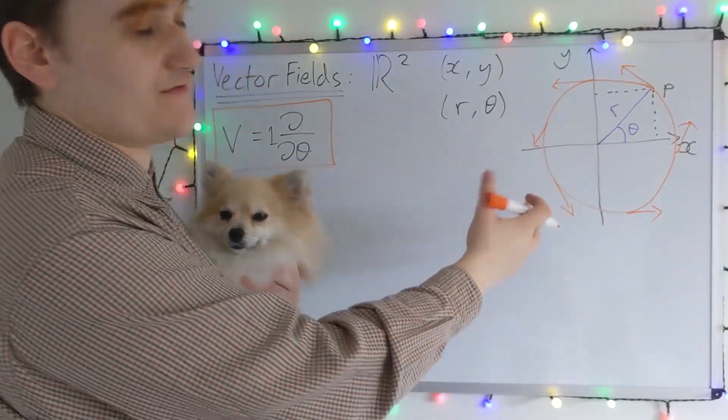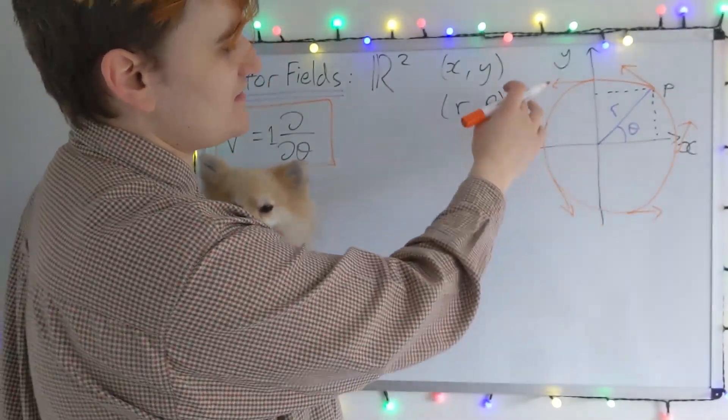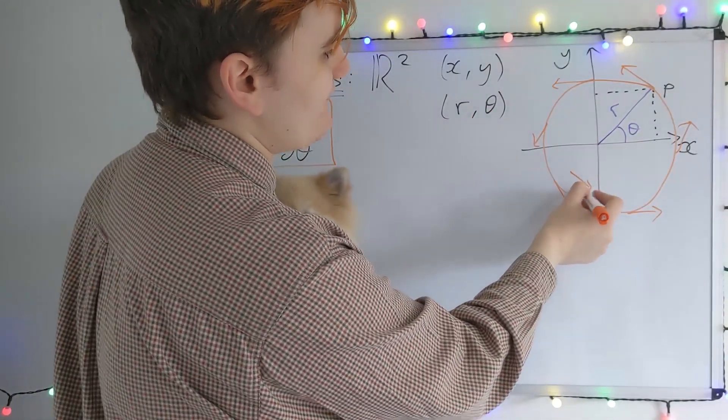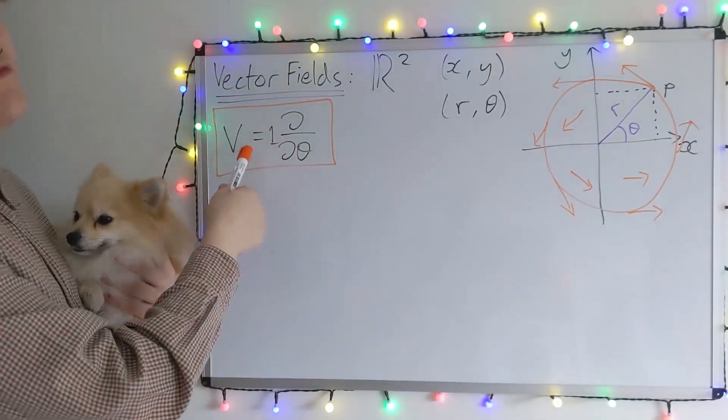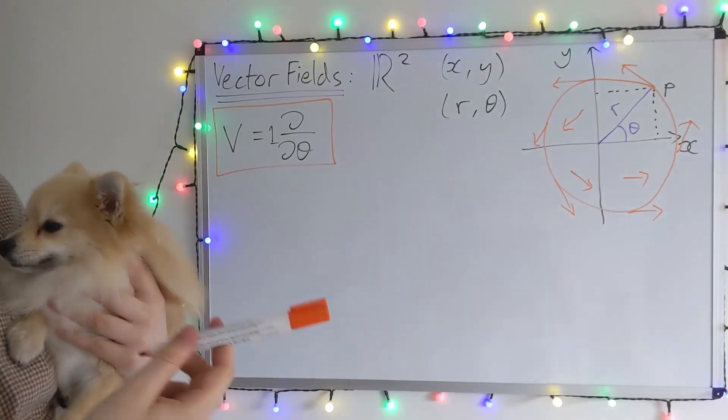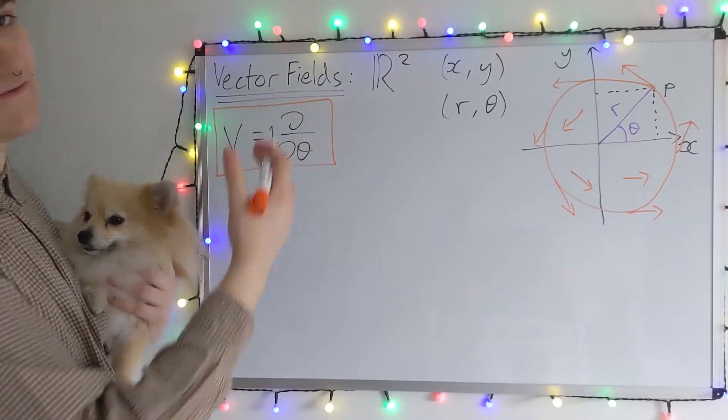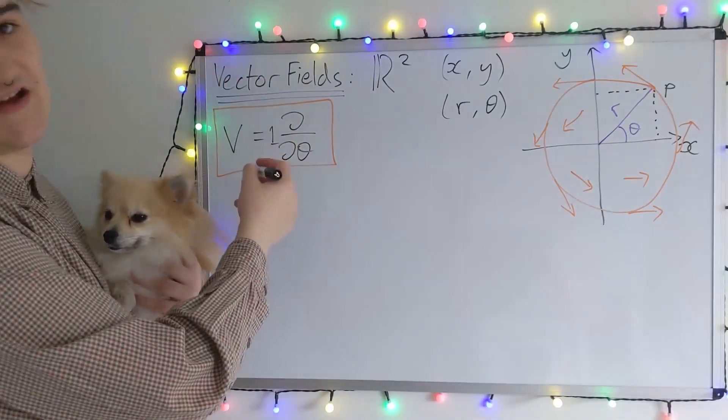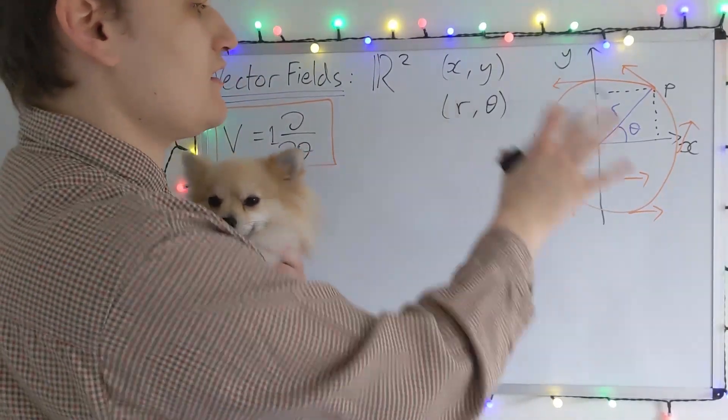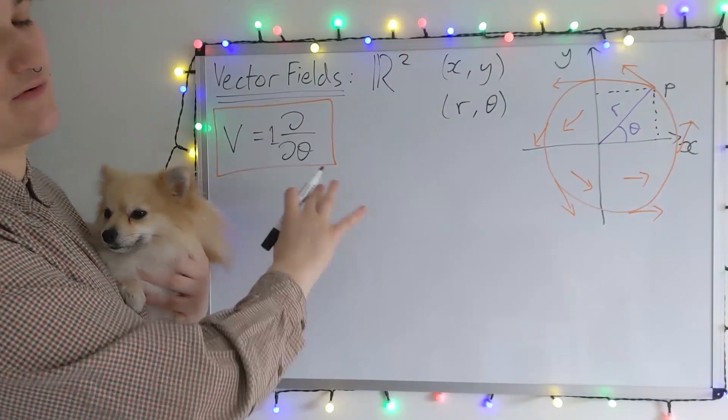And now remember, I've only drawn a few of the vectors in the vector field. There is going to be one of these vectors at every single point in the manifold. And because the component is just one, all the vectors are normalized to have unit length. I could have just written any kind of constant here, or even something more complicated like a function of the radius. But for now, I'm just going to consider this simple d by dθ.